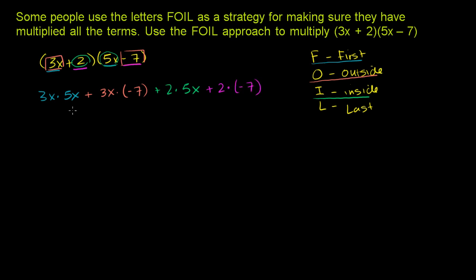And we end up getting 3x times 5x is 15x², or I should say minus, because it's going to be a negative sign here. So 3x times negative 7 is negative 21x. And then we have 2 times 5x is plus 10x, and then 2 times negative 7 is negative 14.